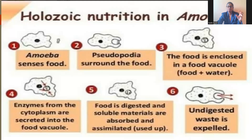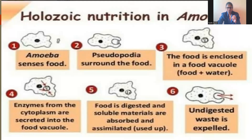In summary for amoeba: first, amoeba senses the food; second, pseudopodia surround the food; third, the food is enclosed in a food vacuole containing food plus water; fourth, enzymes from the cytoplasm enter the food vacuole and digestion begins; fifth, food is digested and soluble materials are absorbed by the cytoplasm and used by the amoeba; and finally, undigested substances are expelled from the body. This is holozoic nutrition in amoeba.